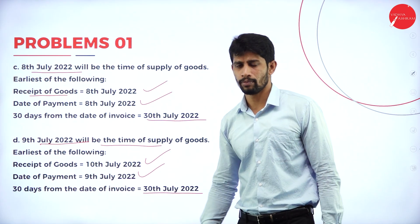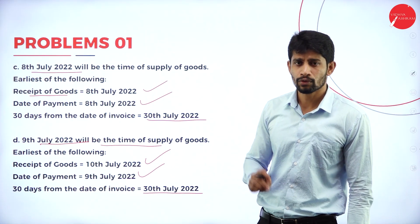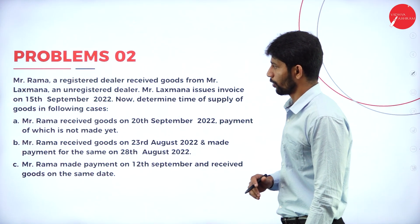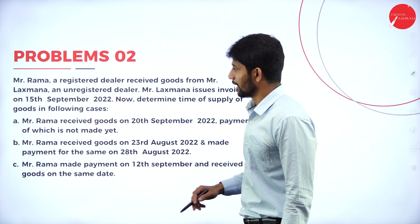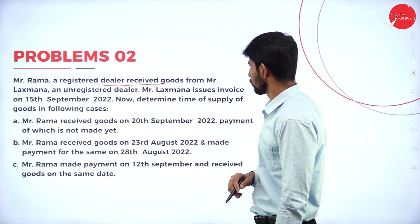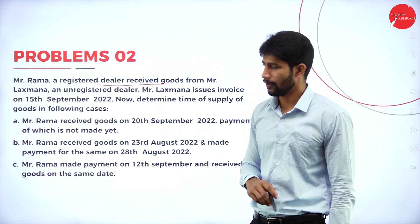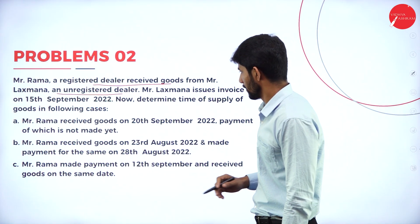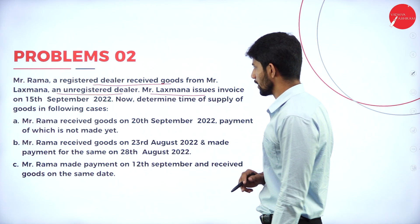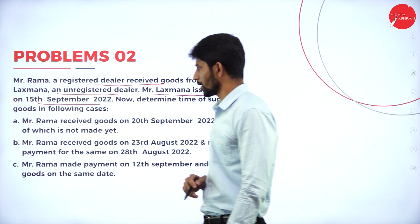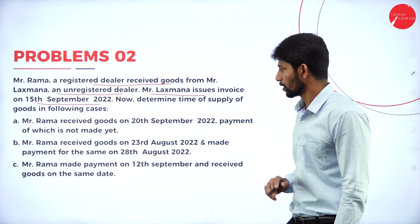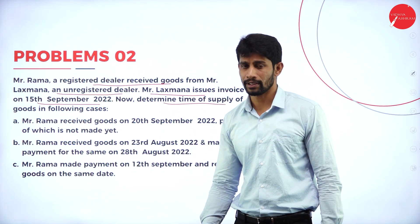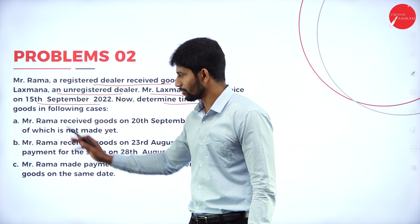This is how we solve problems with respect to time of supply of goods under reverse charge mechanism. Now let us move on to the second problem. Mr. Rama, a registered dealer, received goods from Mr. Lakshmana, an unregistered dealer. Mr. Lakshmana issues invoice on 15th September 2022. Determine the time of supply of goods in the following cases. We have a total of three cases.